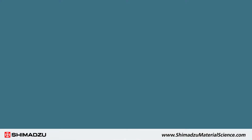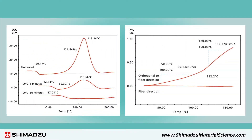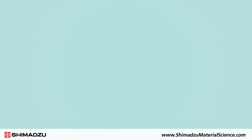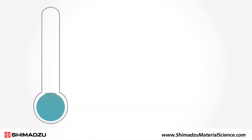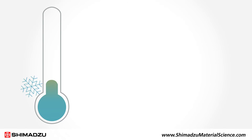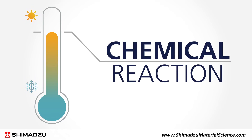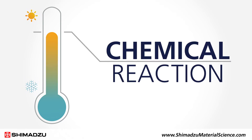With thermal analysis instruments, a variety of physical and chemical changes can be measured while the sample is heated or cooled. These systems can determine the temperature at which phase transitions and chemical reactions occur.